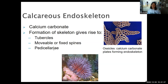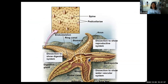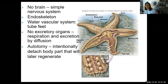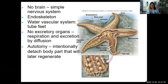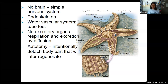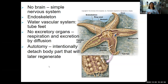There's also something called pedicellariae — little spikes that can come out. They have a water vascular system, an ability to transport water throughout the entire body. They don't have any excretory organs, so respiration and excretion are mainly done by diffusion, though there is an anus so some things can move out. And then there's autotomy, which means they can intentionally detach a part of their body that will later regenerate. These are the key defining characteristics of the phylum Echinodermata.